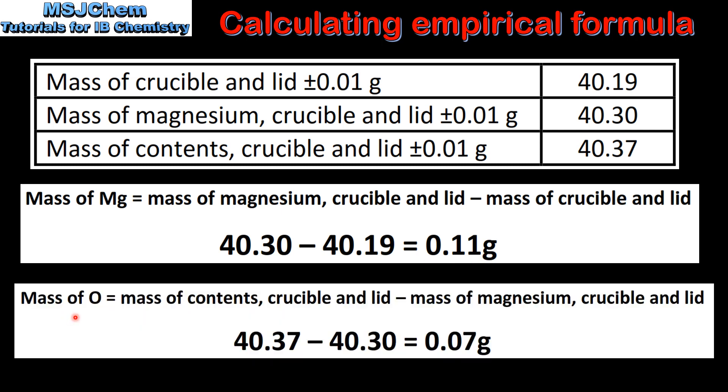To calculate the mass of oxygen, we subtract the mass of the magnesium, crucible, and lid from the mass of the contents, crucible, and lid, which gives us 0.07 grams.